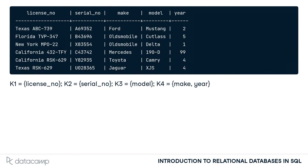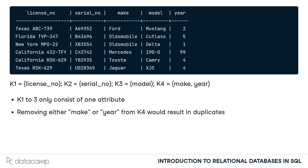Remember that super keys are minimal if no attributes can be removed without losing the uniqueness property. This is trivial for k1 to k3, as they only consist of a single attribute. Also, if we remove year from k4, make would contain duplicates and would therefore be no longer suited as a key. These four minimal super keys are also called candidate keys.